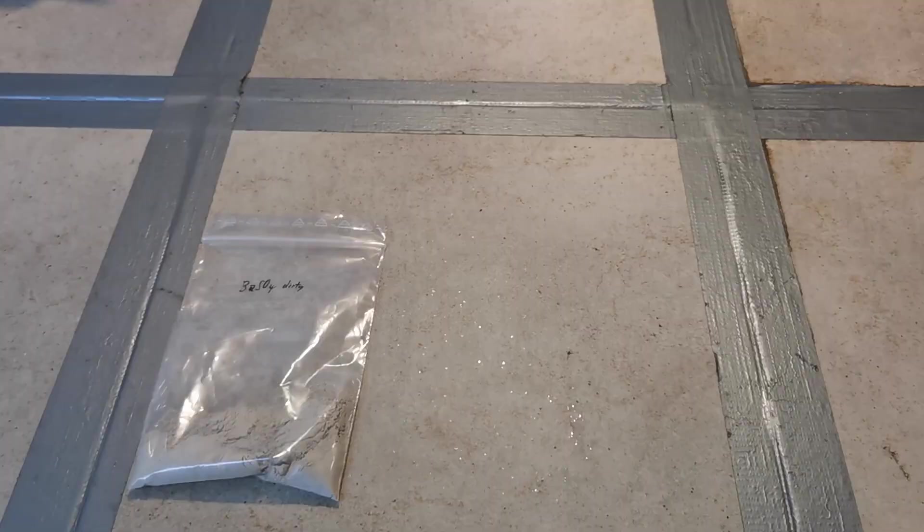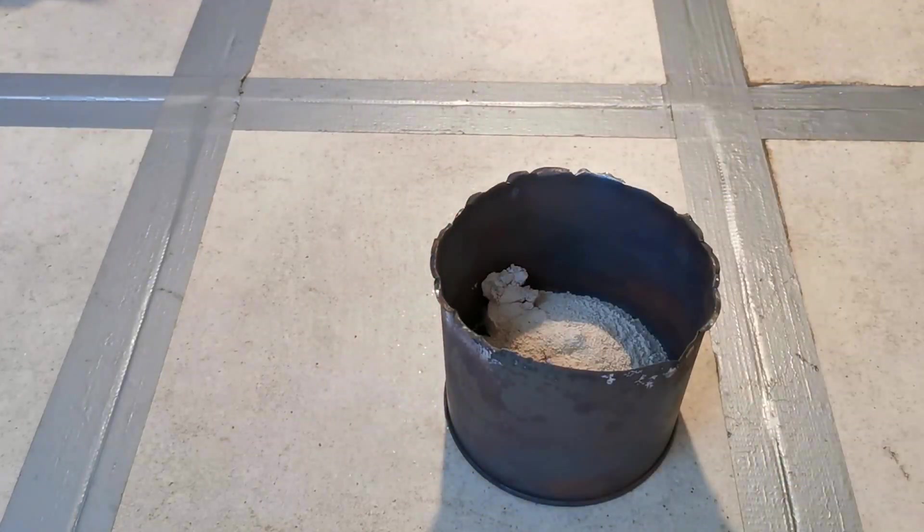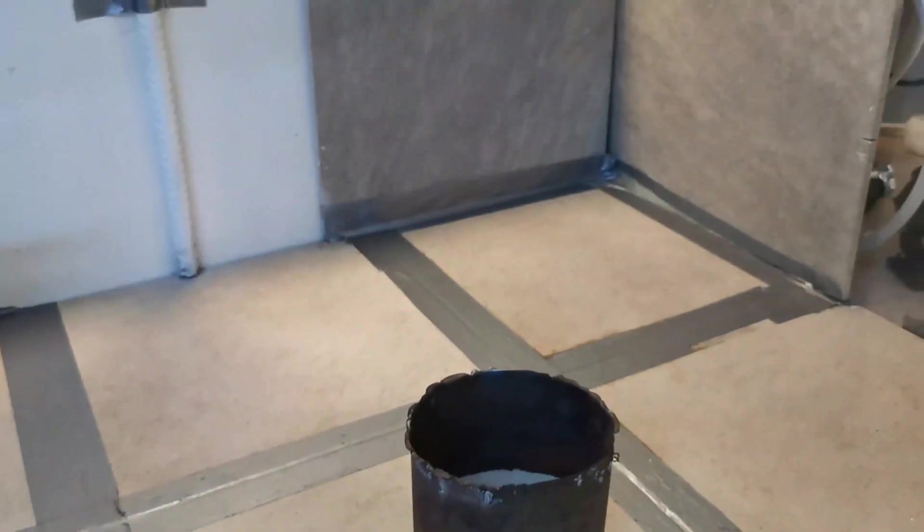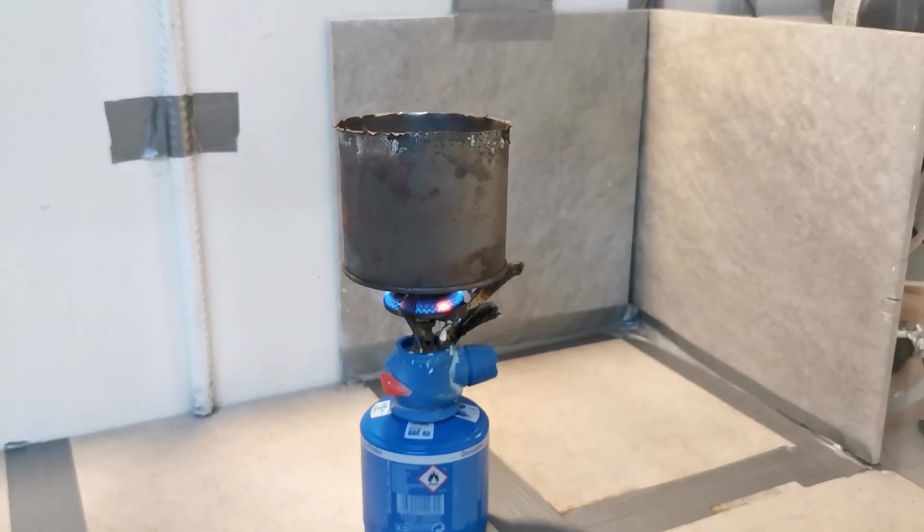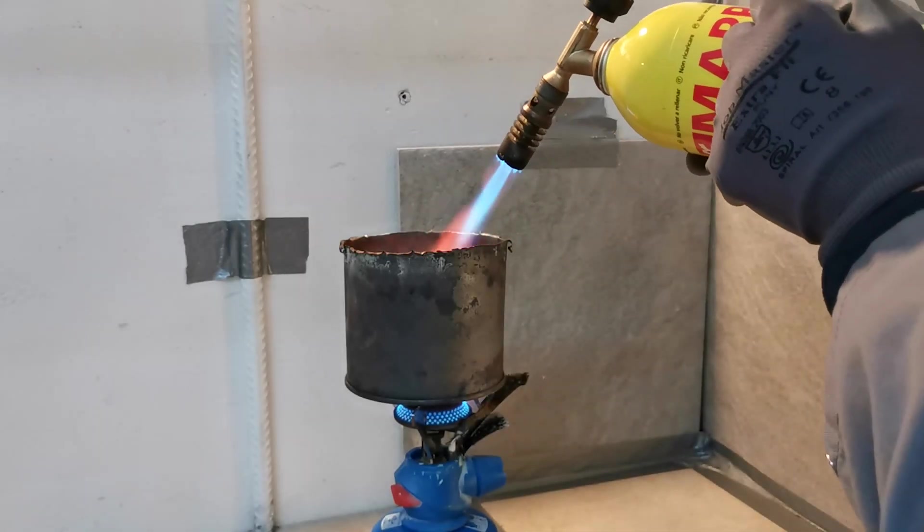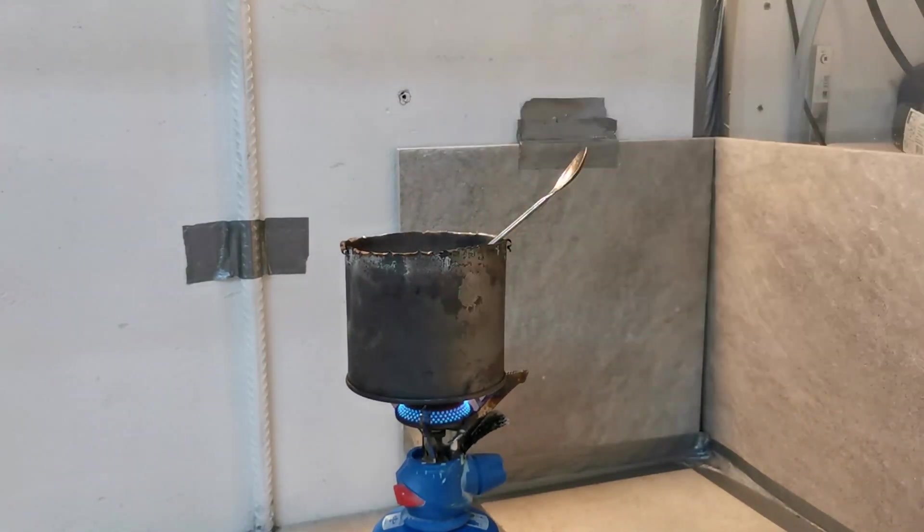First I heated the barium powder with the gas burner and blowtorch to get rid of any organics and elemental carbon that is present. If you have an electric furnace, I highly recommend just putting it in there for some time, but I only have a DIY version which can't sustain more than 500 degrees which just doesn't cut it.